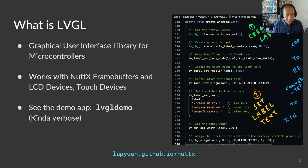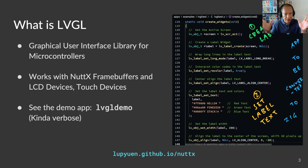There is a demo app bundled with NuttX. But be careful — the code is super verbose because it tries to create all kinds of LVGL widgets. For today, we shall look at a simple LVGL demo that creates a single text label.